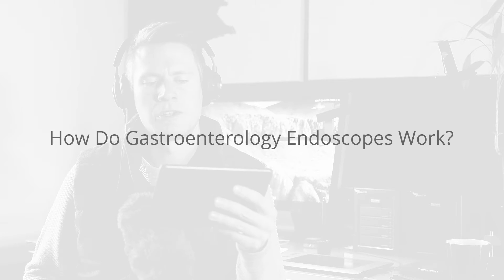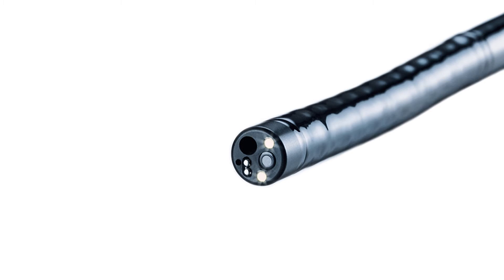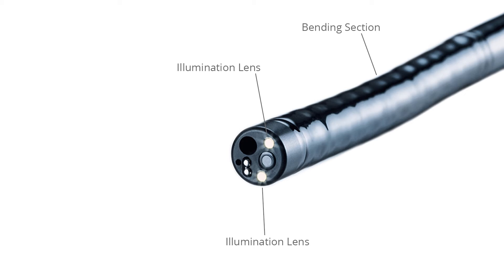The distal end is inserted into the GI tract and the user operates the controls on the proximal end. Typical components at the distal end include the bending section, which can be articulated vertically and horizontally to navigate through the GI tract. The illumination lens transmits light via fiber optics. This light is reflected and returned through the objective lens to form the image. Fiber endoscopes transmit this light through fiber optics, whereas video endoscopes capture the light using an imaging sensor within the distal tip.